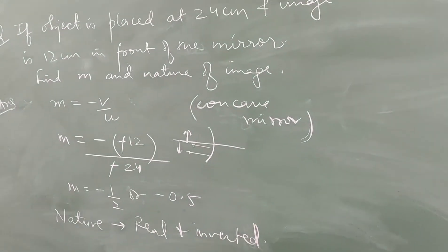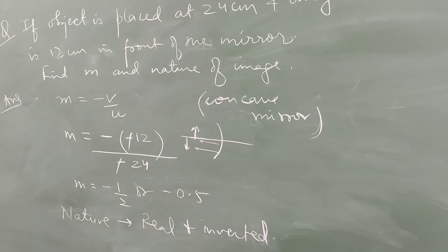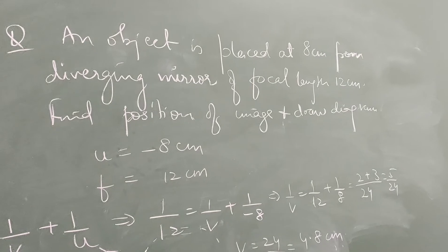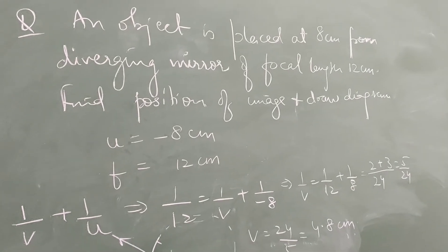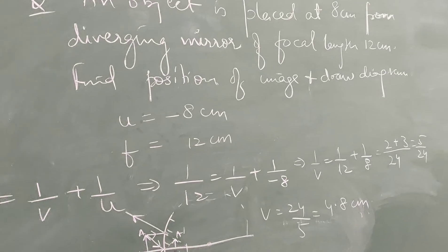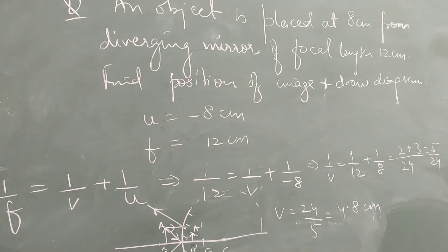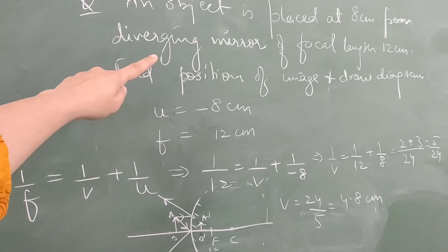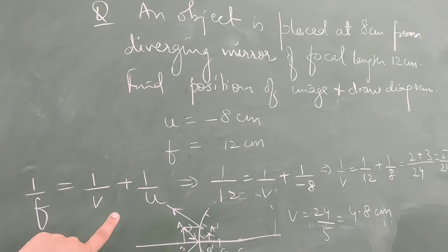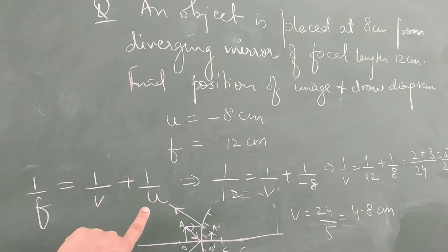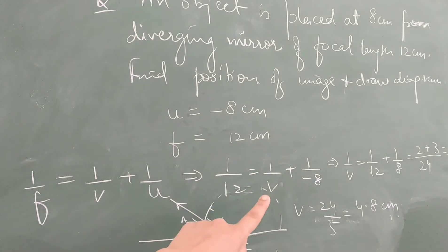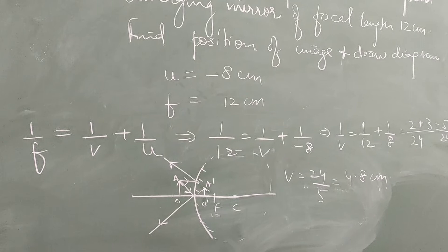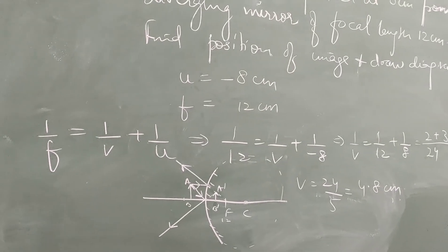Next: object is placed at 8 cm from a diverging mirror with focal length 12 cm. Find image position. u = minus 8, f = plus 12 (positive, convex mirror). Applying mirror formula 1/f = 1/v + 1/u: 1/12 = 1/v + 1/(minus 8). Taking LCM of 24 and solving, image distance comes out to be 4.8 centimeters.